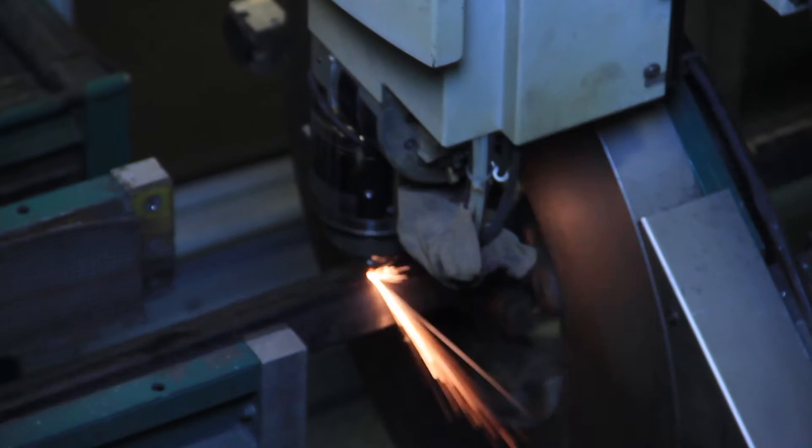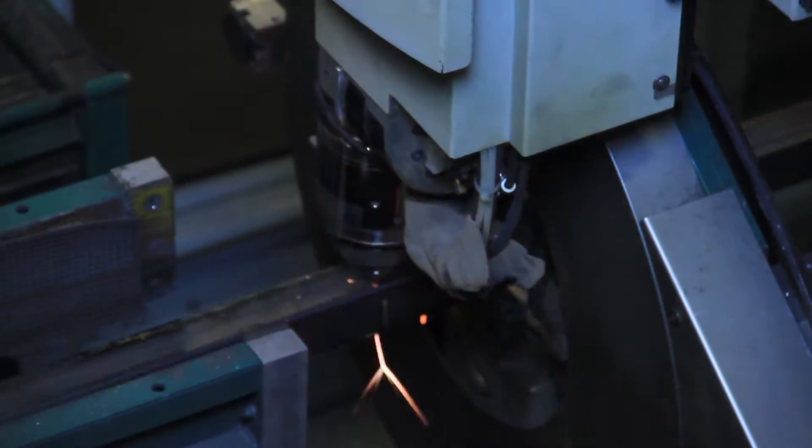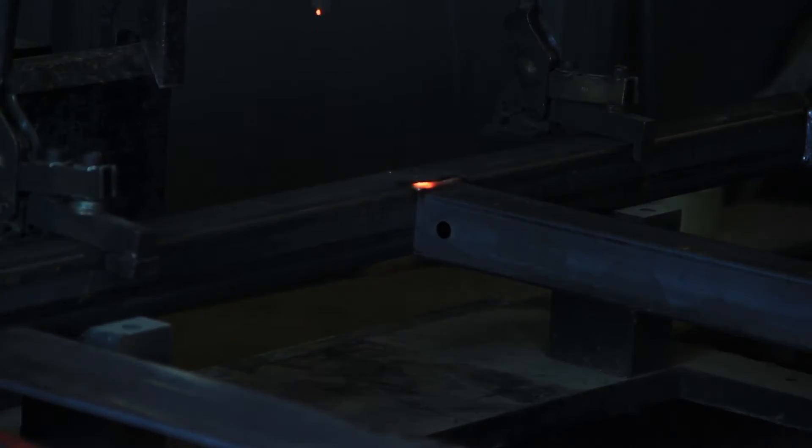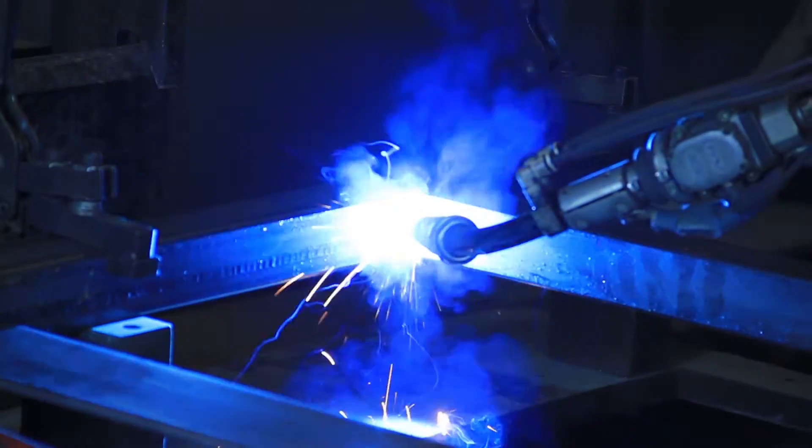After the tube laser is used to cut the side and the top pieces all as one piece, we're able to use our robotic welder to robotically weld the pieces together and it fits all together like a jigsaw puzzle.